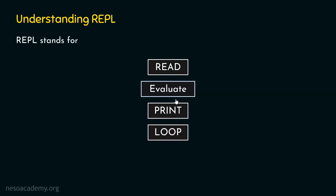So this is the meaning of read, evaluate, print, loop. First, Python reads your statement, then it evaluates it, then it prints the result, and then it repeats the same process. That is why loop is included — loop means repeat the process done before. Python interactive shell works in this way: read, evaluate, print, and then repeat.